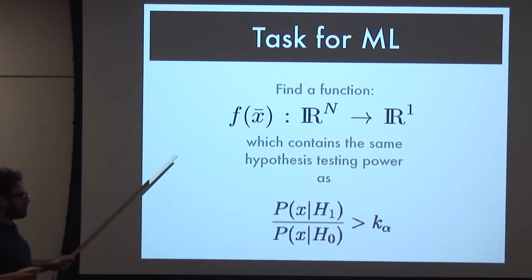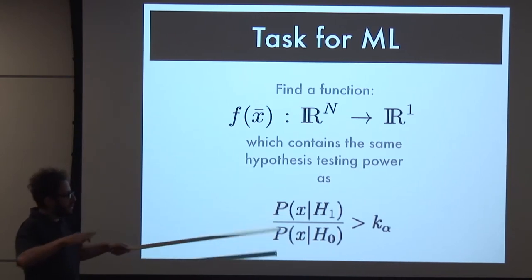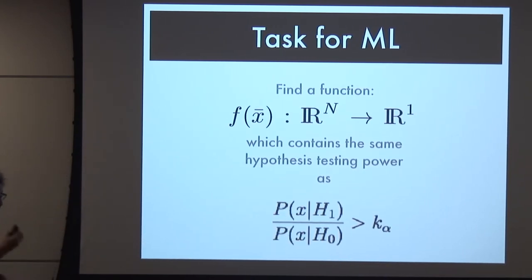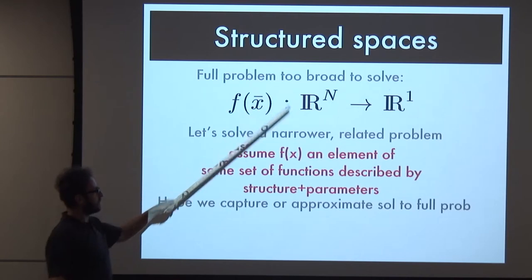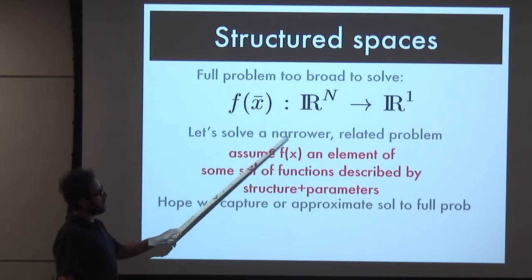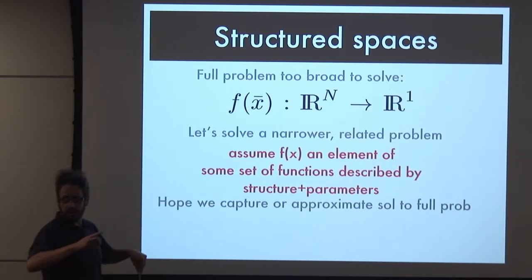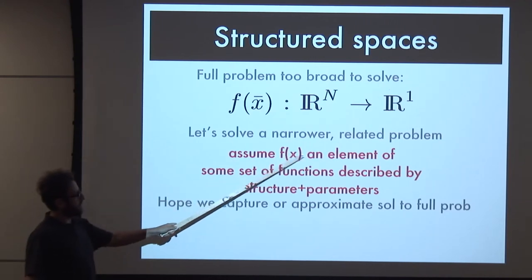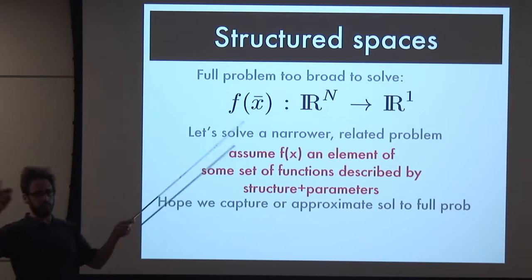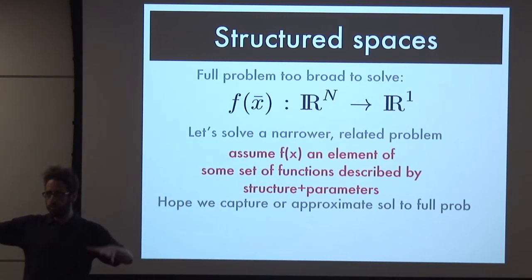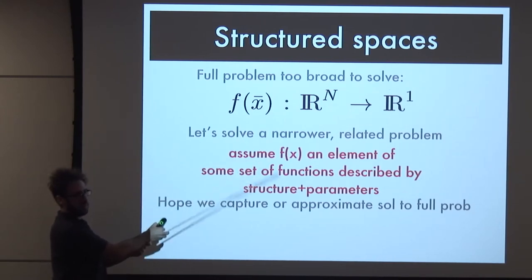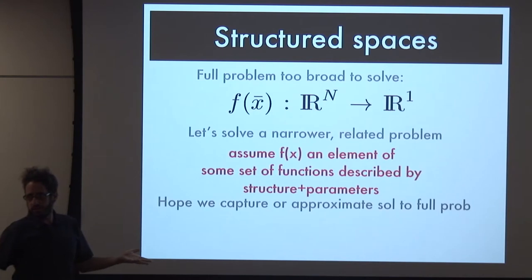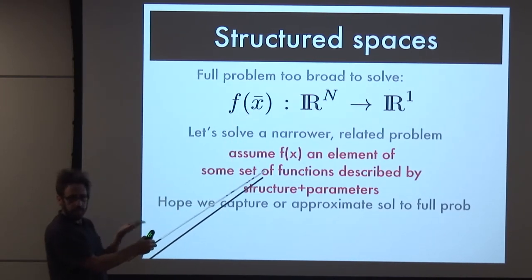This is the task of machine learning. We want to be more general - we don't need to find the exact likelihood ratio, we can find something equivalent that solves the problem. The problem is too hard to solve in full generality because the space of possible functions is infinite. So a standard approach is to assume f(x) is an element of some set of functions described by a structure of properties. Instead of having this vast ocean of possible ideas, we build structure into the space and explore that structure, hoping our solution to the general problem lives in this subspace.